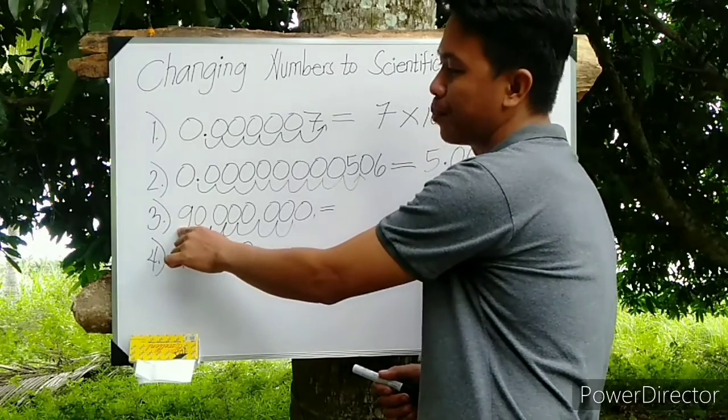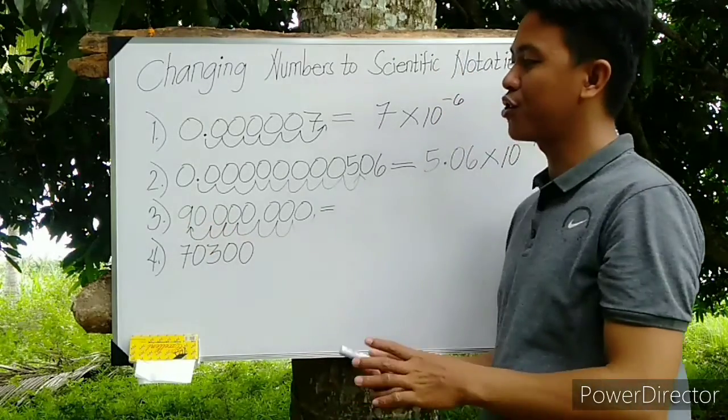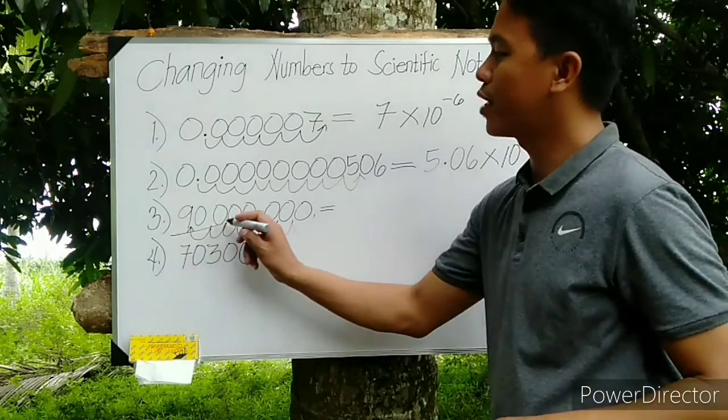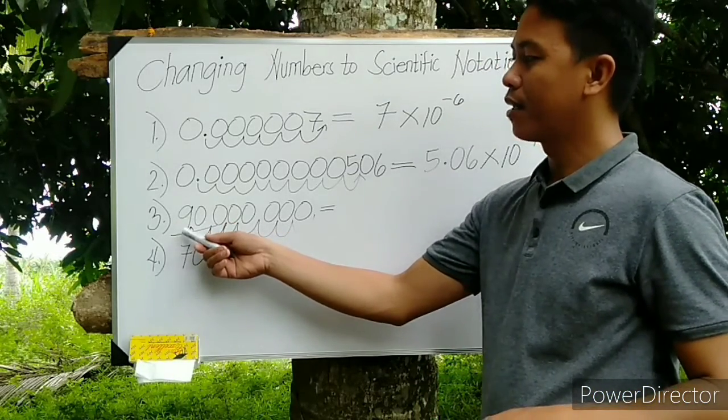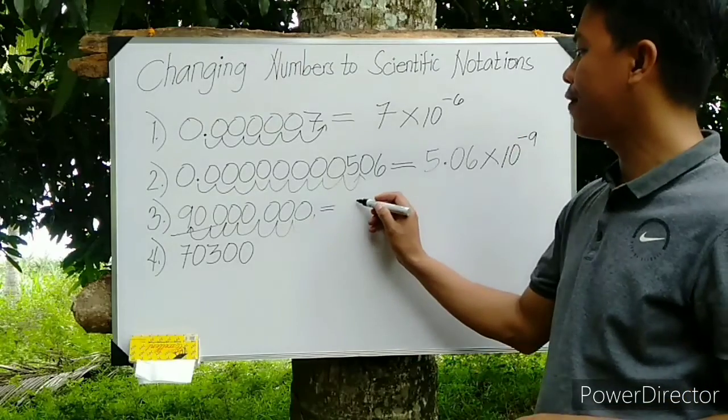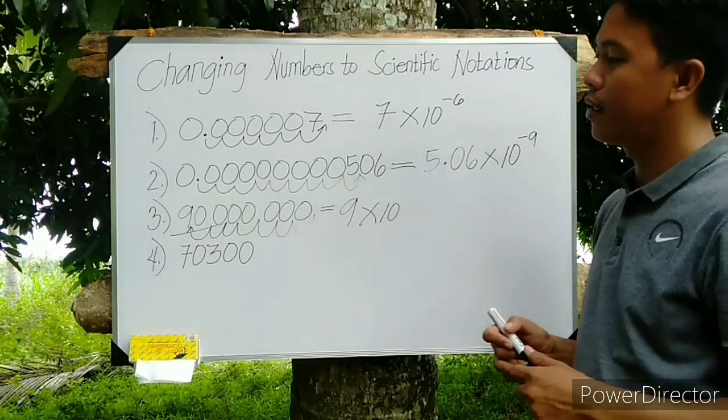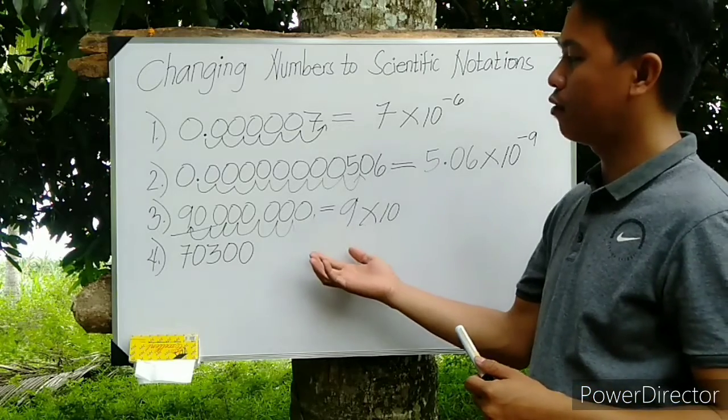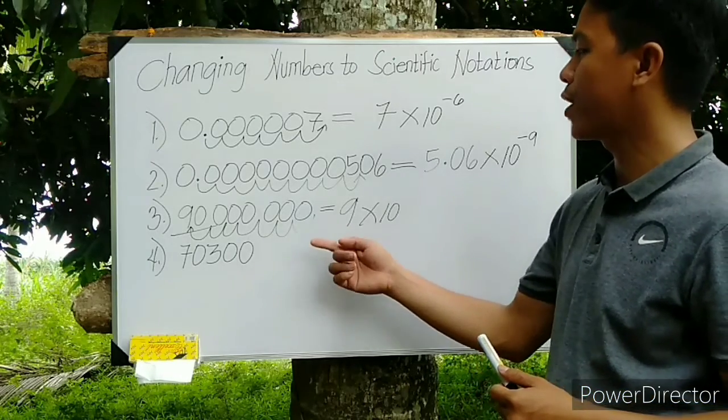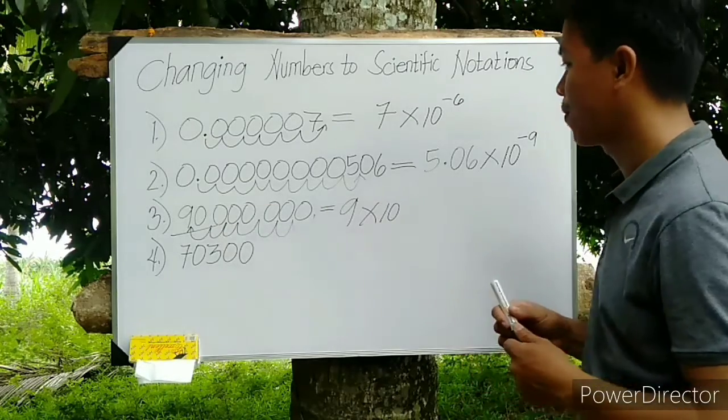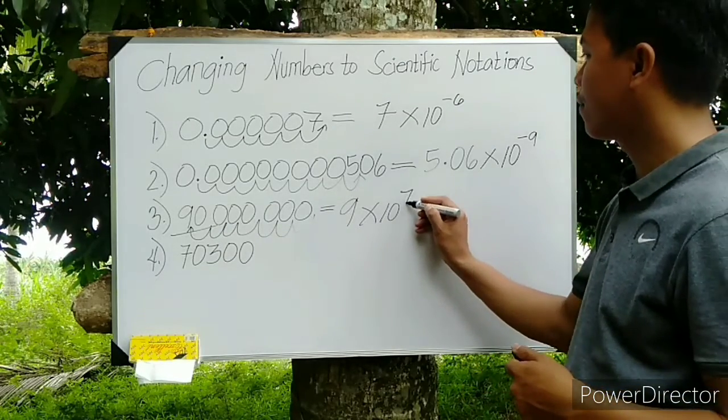It's because when we end here after 9, that is 0.9, which is less than 1. That's why the point should be between 9 and 0, so that the value of A is equal to 9 times 10. Then the power will be based from the movement: 1, 2, 3, 4, 5, 6, 7. So positive 7.